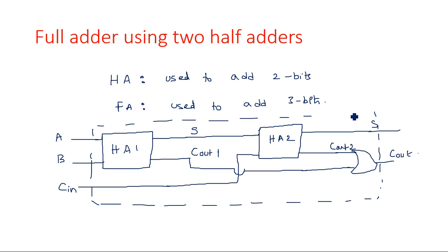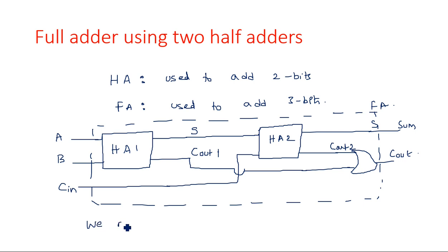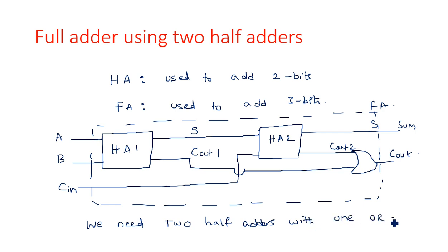So this is the way of designing a full adder using two half adders. We need two half adders along with one OR gate — two half adders with one OR gate to design a full adder.